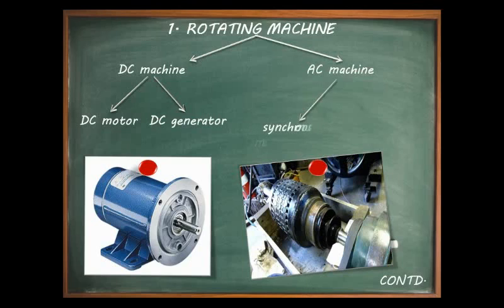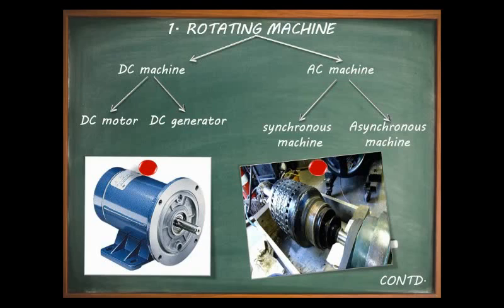AC machines are divided into synchronous machines and asynchronous machines. A synchronous machine is an AC machine in which the rotor moves at a speed which bears a constant relationship to the frequency of currents in the armature winding, which simply means the speed of rotation of the rotor is the same as the frequency of the supply in the stator.